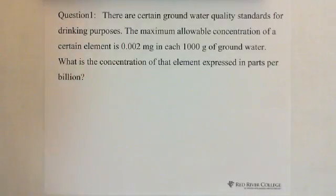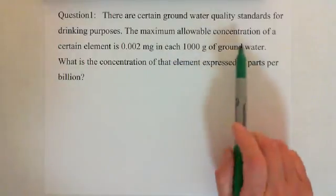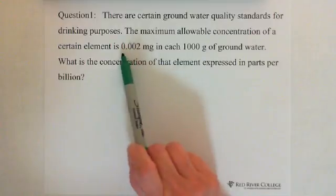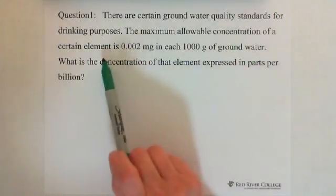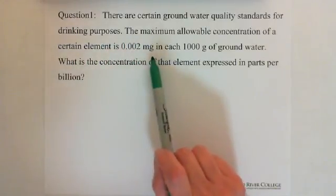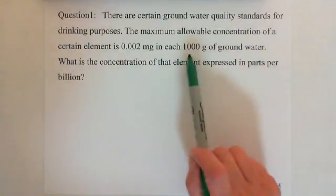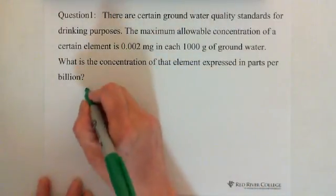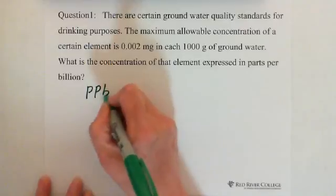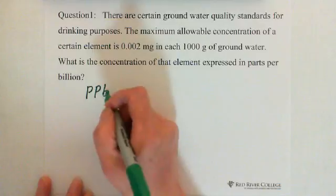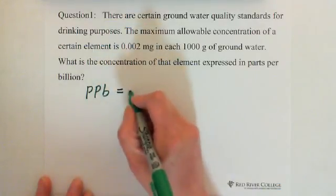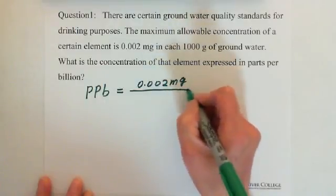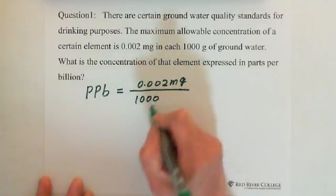Follow the definition. We look at the question. The maximum allowable concentration of a certain element is 0.002 milligrams — this is the mass of solute. In each thousand grams of ground water — the thousand grams of ground water is the mass of solution. So PPB of that element equals 0.002 milligrams over 1000 grams of ground water.